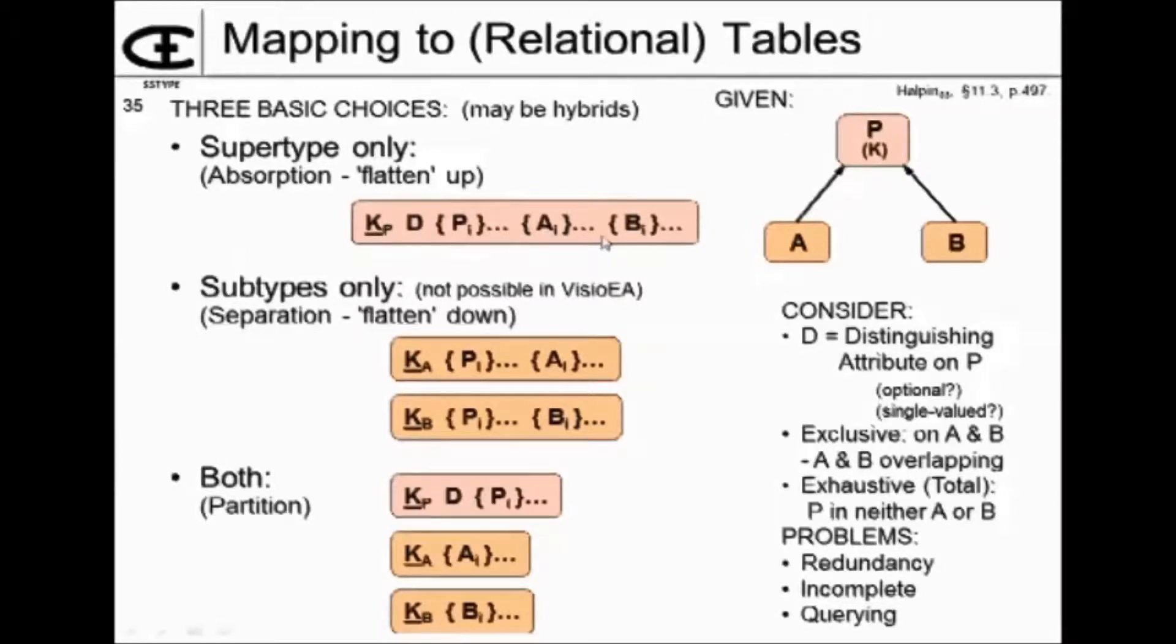And here we've got the attributes of the supertype, the additional attributes of the subtype A, and additional attributes of the subtype B. And there always have to be some additional attributes for each of the subtypes. So that's one choice, that's flattening up or absorption. Other places might call it something else.